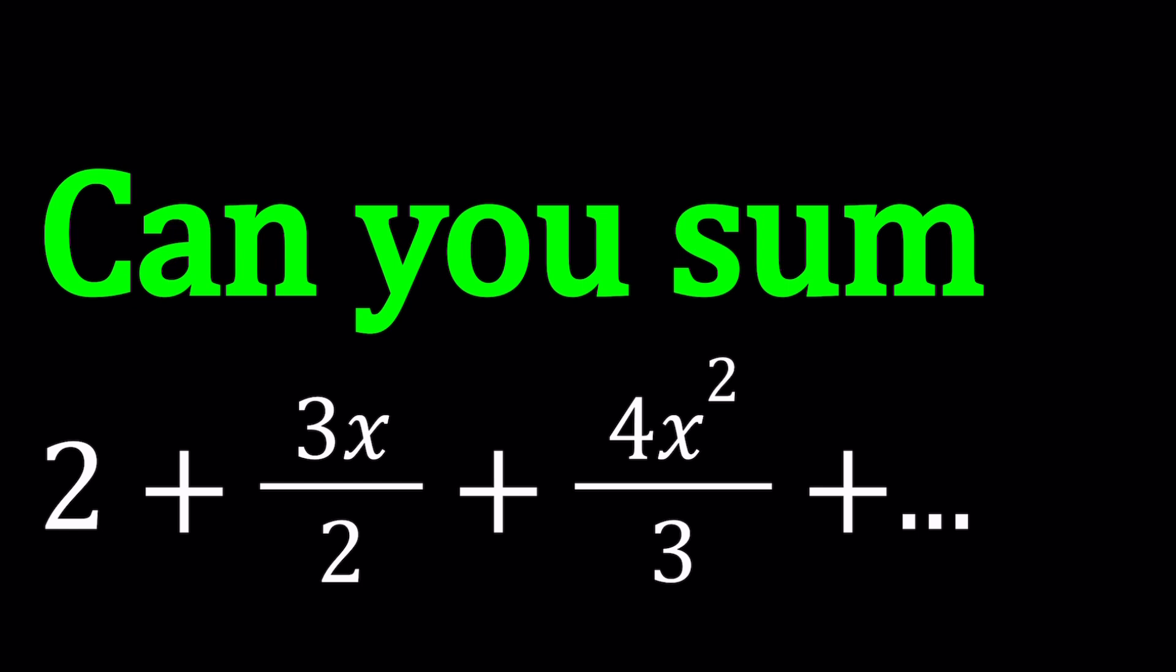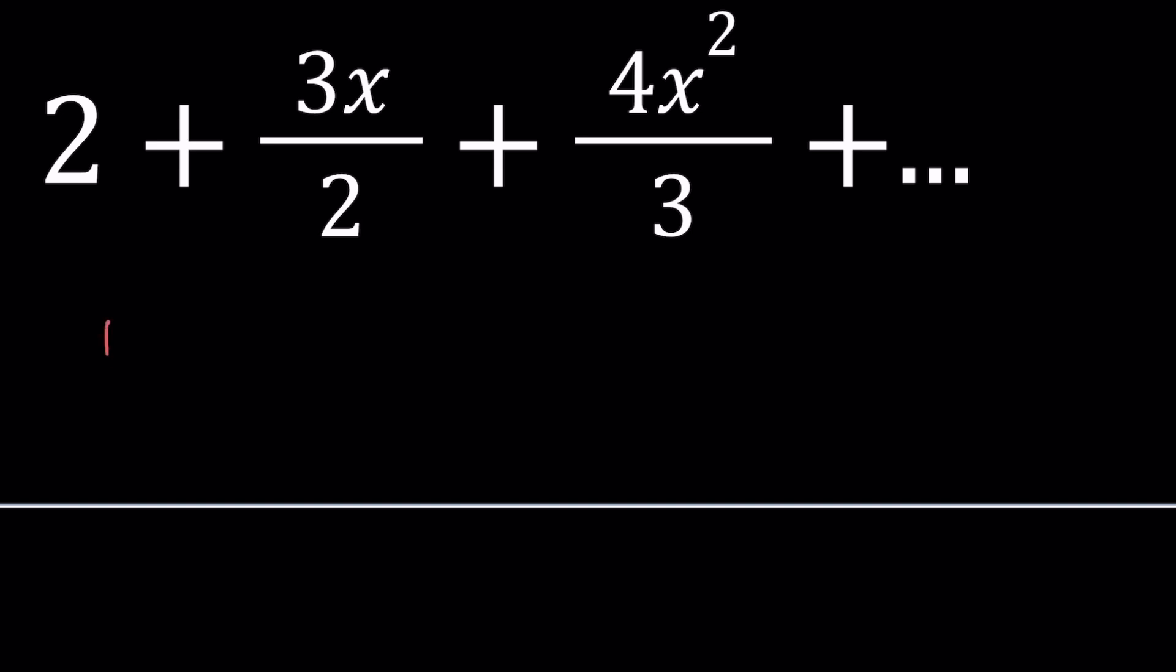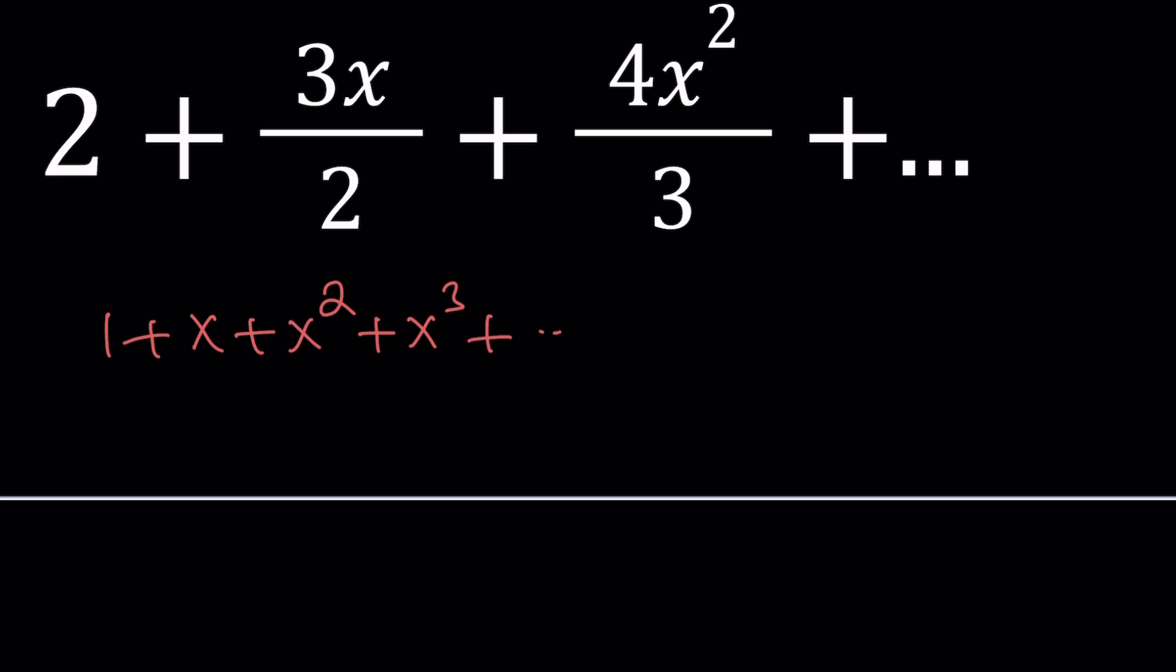Let's start with something we know. The coefficients are kind of weird, aren't they? So let's start with something we know, such as 1 plus x plus x squared plus x cubed and so forth. This is equivalent to 1 over 1 minus x when the absolute value of x is less than 1.